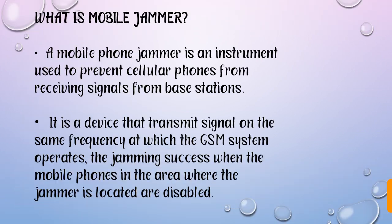So, what is Mobile Jammers? A mobile phone jammer is an instrument used to prevent cellular phones from receiving signals from base stations. You have a device — a mobile phone, cell phone, or smartphone — that gets signals from base stations. You might have seen the towers. Mobile Jammers prevent this cellular phone from getting those signals.